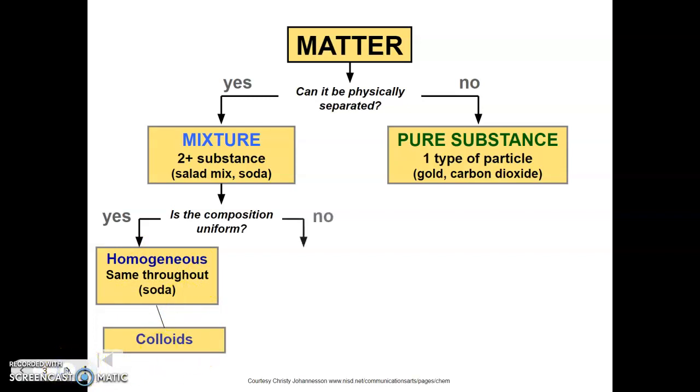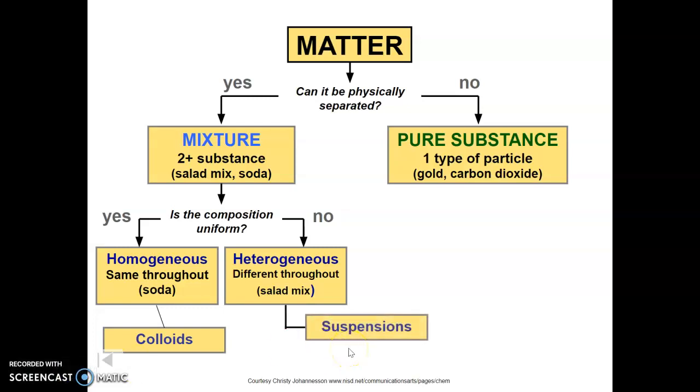Now, if the composition is not uniform, so meaning there are some different textures within the mixture, that's a heterogeneous mixture. And an example of that would be like a salad. So if you think of a salad, a garden salad, it's got lettuce, cucumber, tomato, croutons, maybe some onion. All of those are different textures that you could pick out and easily physically separate it. They all have different textures and it's not uniform. Hetero means different, so heterogeneous just means different throughout. And these are called suspensions. So it's a suspension if it's heterogeneous.